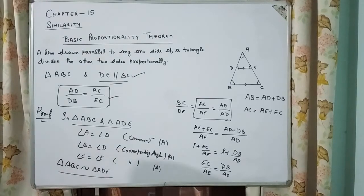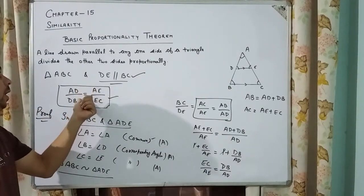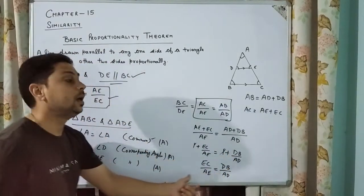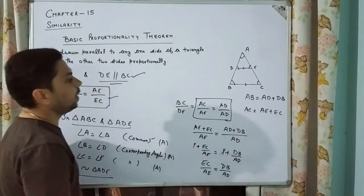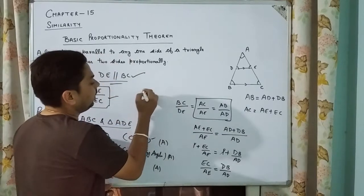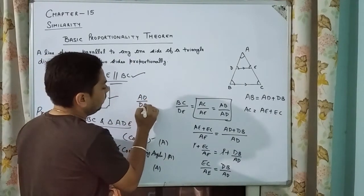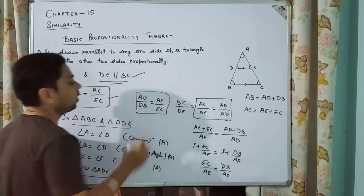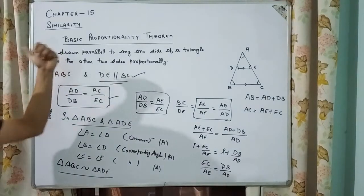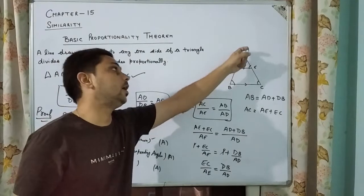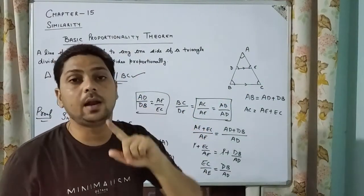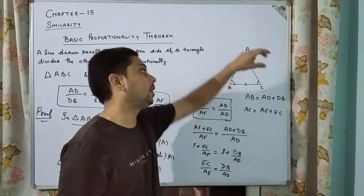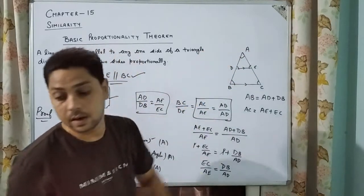Cancelling 1 from both sides we get EC upon AE equals DB upon AD. Taking the inverse, we get AD upon DB equals AE upon EC. This is what we had to prove. So according to the BPT theorem, if we have triangle ABC and a line is parallel to any one side, then the other two sides divide each other proportionally.